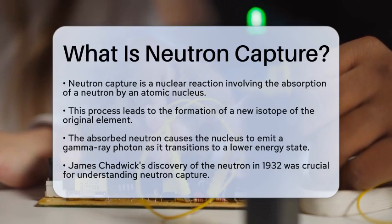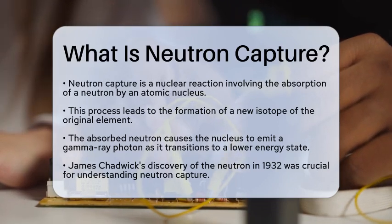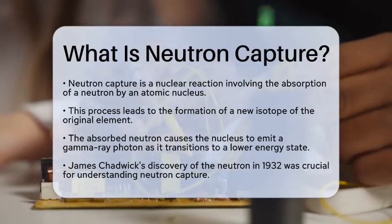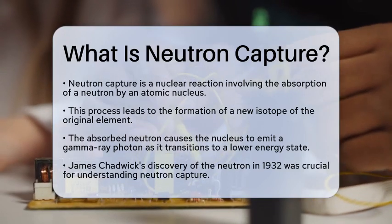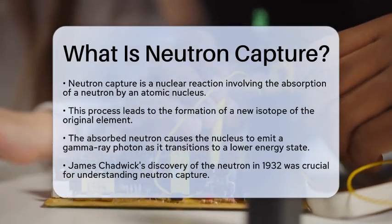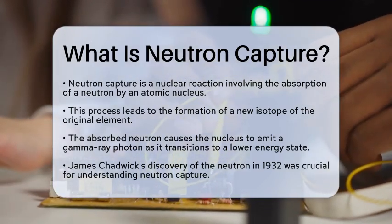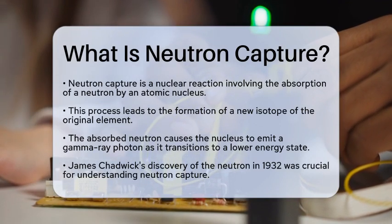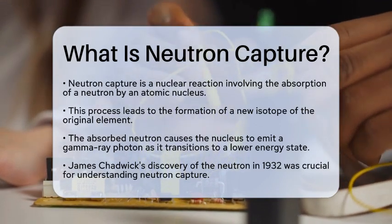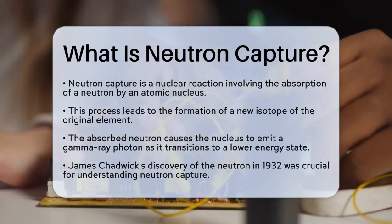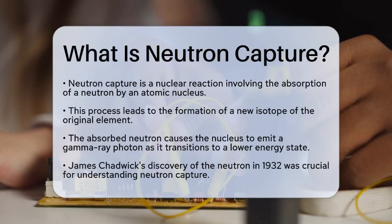It is a nuclear reaction where an atomic nucleus absorbs a neutron, which is a subatomic particle that carries no electric charge. This absorption leads to the formation of a new isotope of the original element as the nucleus gains an additional neutron.